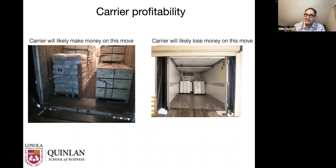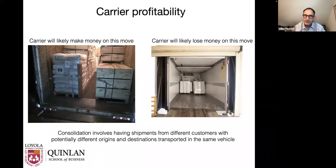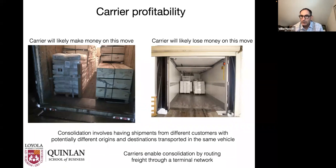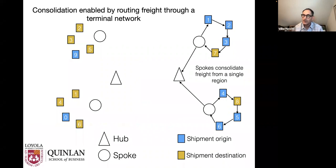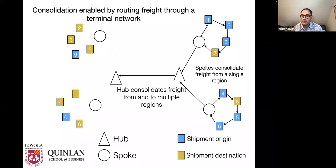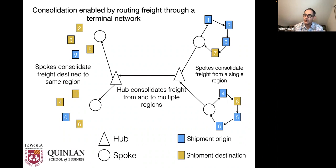Consolidation happens by having shipments from different customers with potentially different origins and destinations transported in the same vehicle. As you may know — and some of this may be review — you also see this hub-and-spoke network structure in air as well. A consolidation carrier achieves high vehicle utilization by having spokes that serve as consolidation points for freight originating in a single region, hubs that serve as consolidation points for freight from multiple regions, and spokes on the delivery side as well.